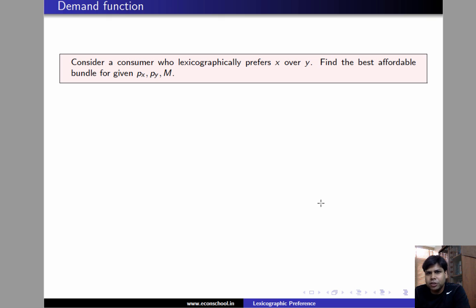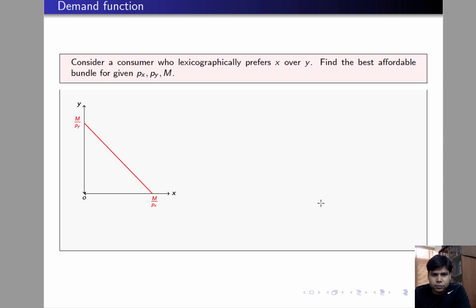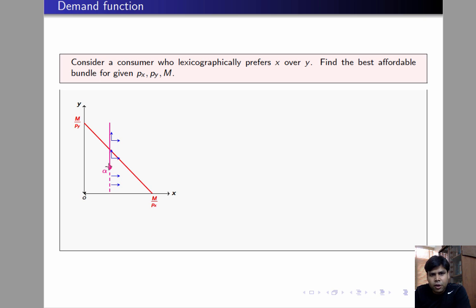We would like to solve for the demand function when the consumer has lexicographic preference of x over y. Let us find the best affordable bundle by first plotting the budget line. Consider an arbitrary point inside the budget line, such as alpha, and see if that can be an optimal choice. All bundles directly above alpha offer the same amount of x but higher amount of y, so by criterion 2, bundles lying above alpha are strictly preferred to alpha.